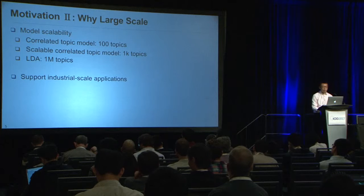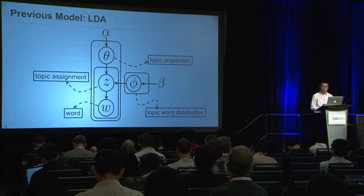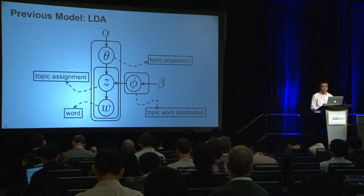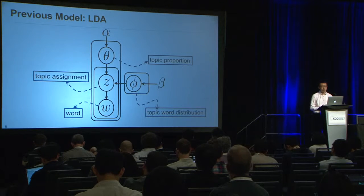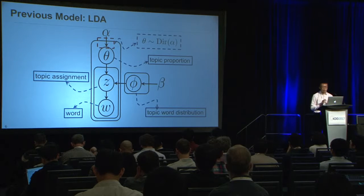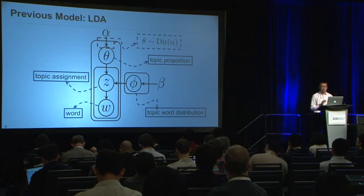Next, I will briefly review the related works. First, we quickly review LDA and illustrate the notations. In LDA, the topic proportion vector theta is generated from a Dirichlet prior. From topic proportions, we sample topic assignments and then generate evidence words. However, the conjugate Dirichlet prior models topic occurrence almost independently and fails to capture rich topic correlations.